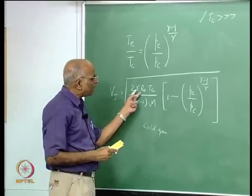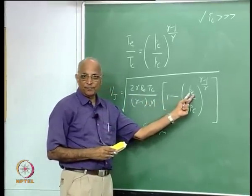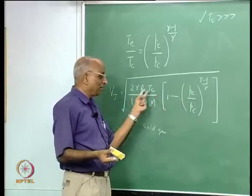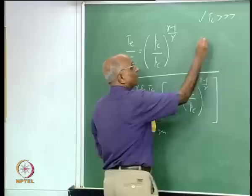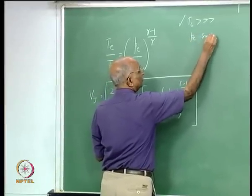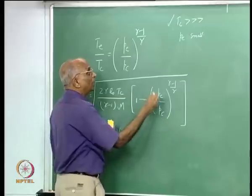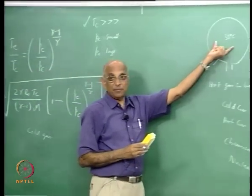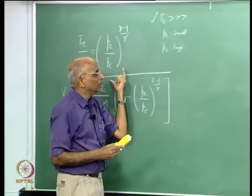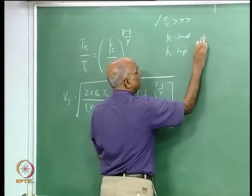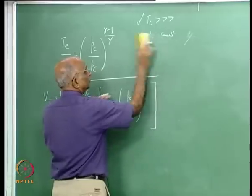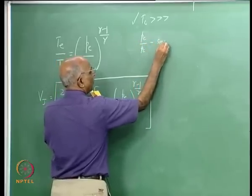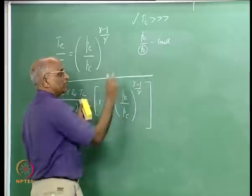Let us look at the exit pressure. If exit pressure P_e is very small (vacuum), the term becomes small, giving higher V_j. So the ratio P_e/P_c must be small — meaning the chamber pressure must be high and the exit pressure must be small. That is the second conclusion from this equation.